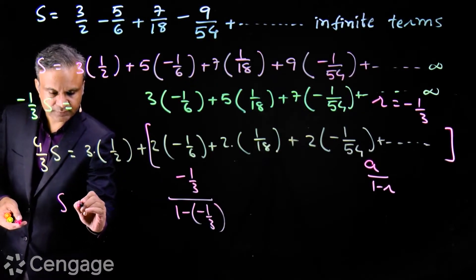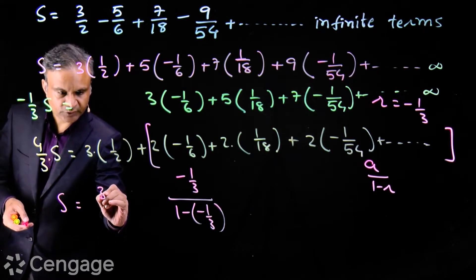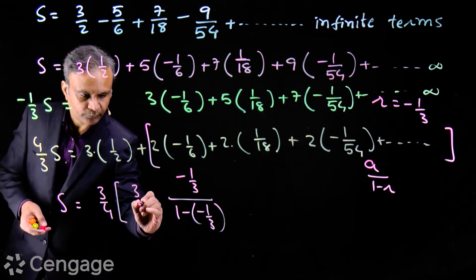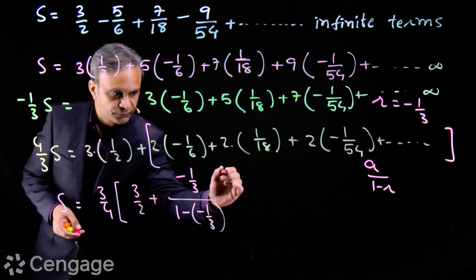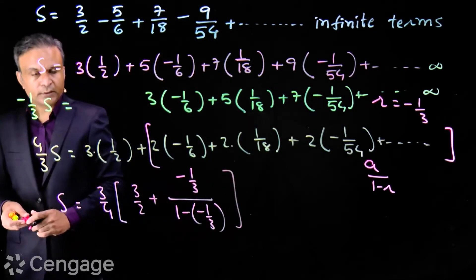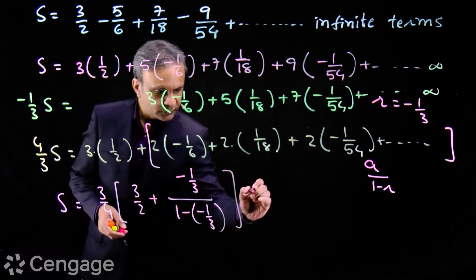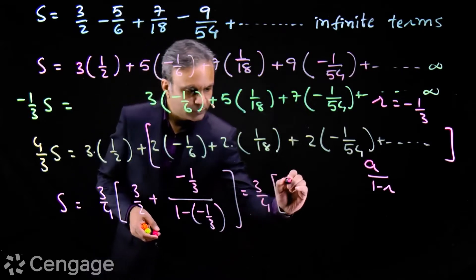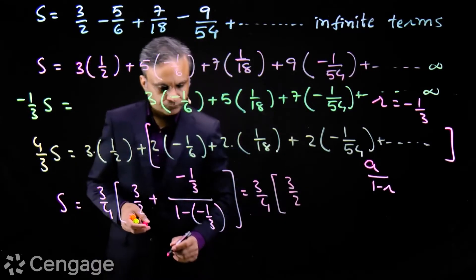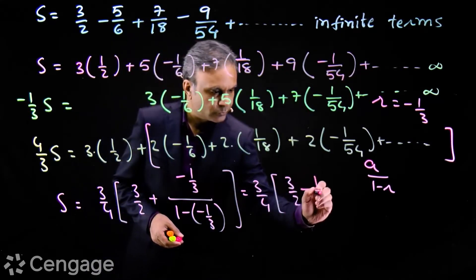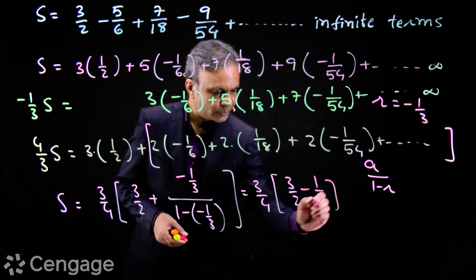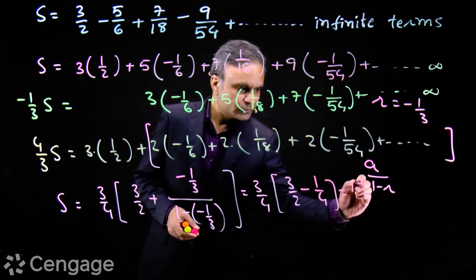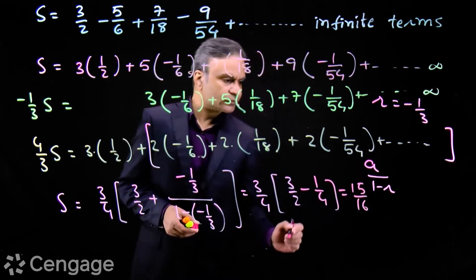So S = (3/4) × [3/2 + this GP sum]. Simplifying: (3/4) × (3/2) plus the remaining term gives (3/4) × (3/2 - 1/4). That equals (3/4) × (5/4), which gives us 15/16. So the sum of this infinite AGP is 15/16.